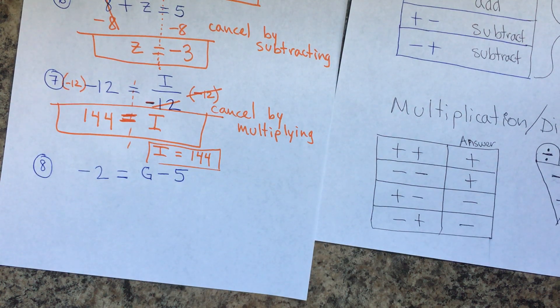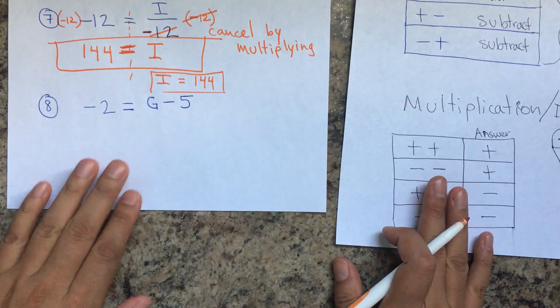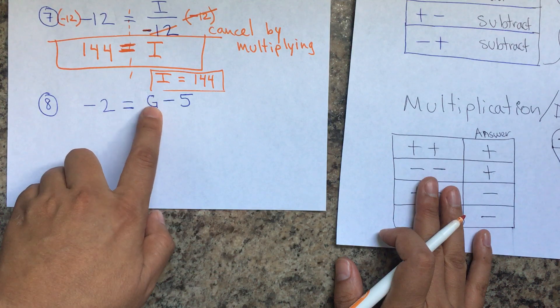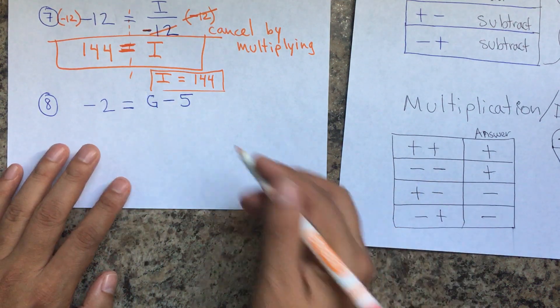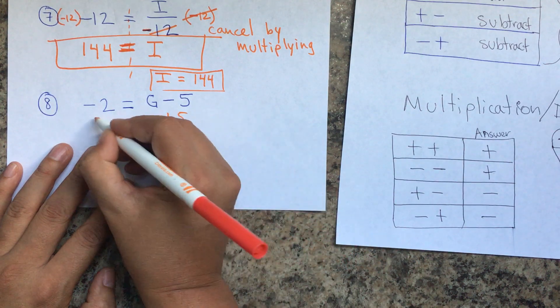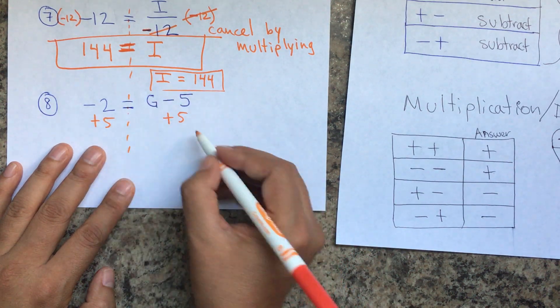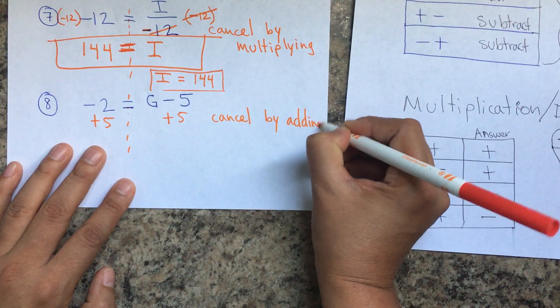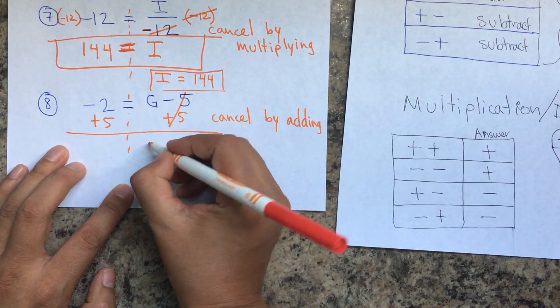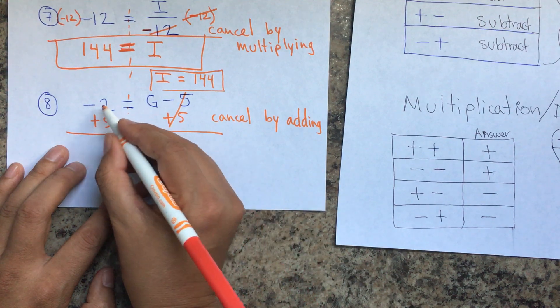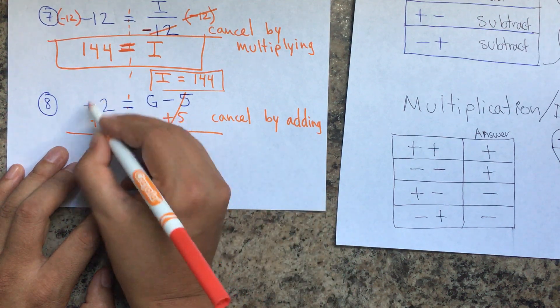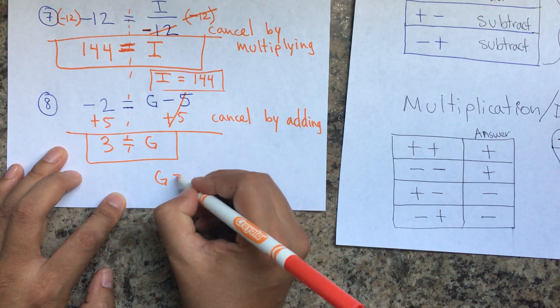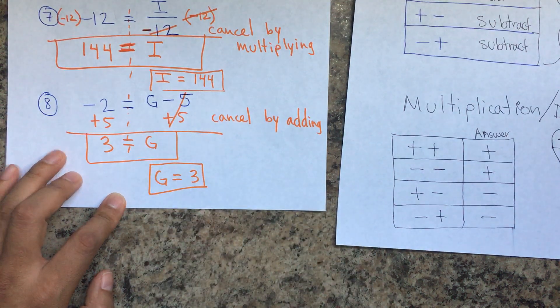Let's go to the last one. And it says that negative 2 equals G minus 5. If I want to leave G by itself, I'm subtracting 5. The opposite of subtracting is adding. And whatever I do on one side, I have to do it on the other side. So, I'm going to cancel by adding. This cancels. And so, it's going to be G equals negative 2 plus 5. That means I owe $2. I pay 5. So, I end up with 3. So, it's going to be G equals 3. And that's it.